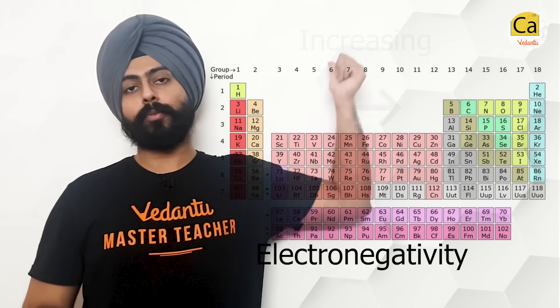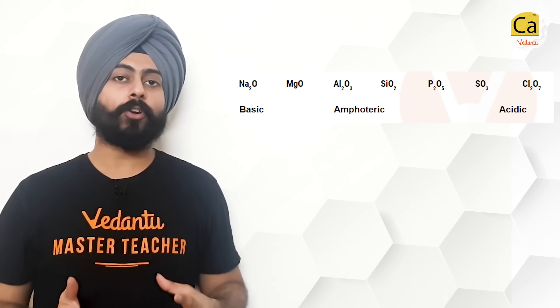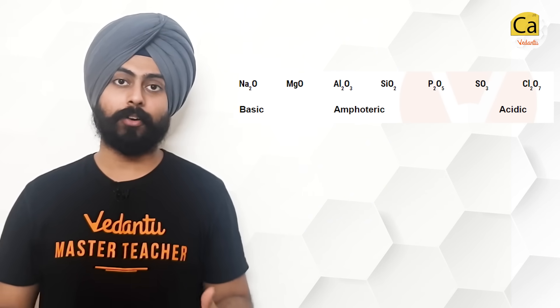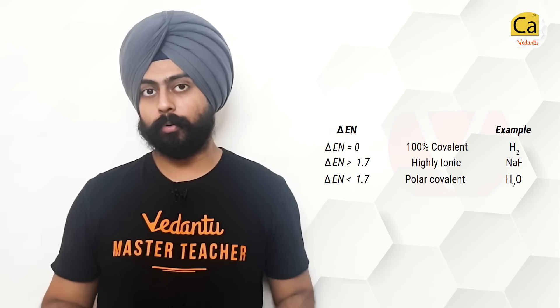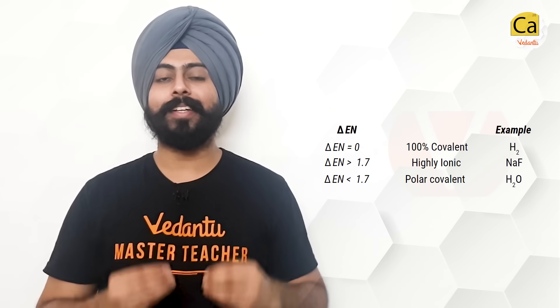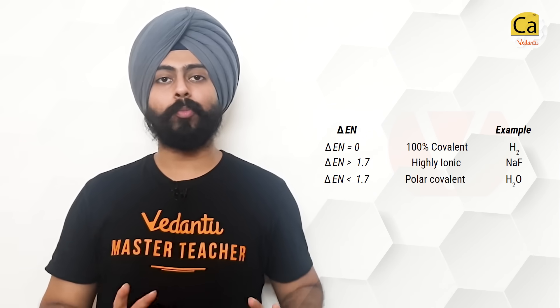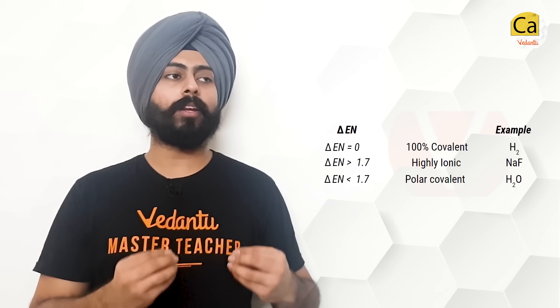Talking about the general trend of electronegativity: from left to right it keeps on increasing, and from top to bottom it keeps on decreasing. Metallic hydroxides and oxides are basic in nature — that's why we call them alkali metals and alkaline earth metals. For non-metals, oxides and hydroxides are acidic. For metalloids in the middle of the periodic table, their oxides are amphoteric. As a general rule, whenever two atoms bond, if their electronegativity difference is more than 1.7 it will be an ionic bond; if less than 1.7, a covalent bond — though this is just a guideline.